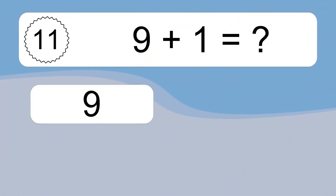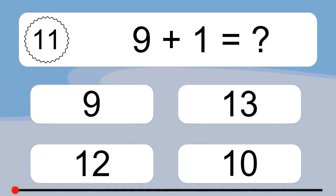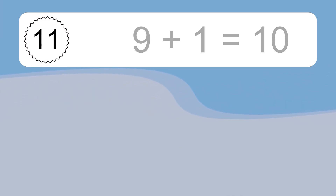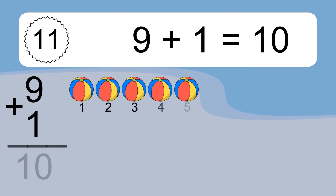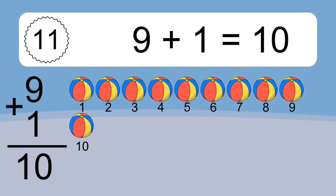9 plus 1 equals what? 9 plus 1 equals 10. Let's count it. 1, 2, 3, 4, 5, 6, 7, 8, 9, 10.